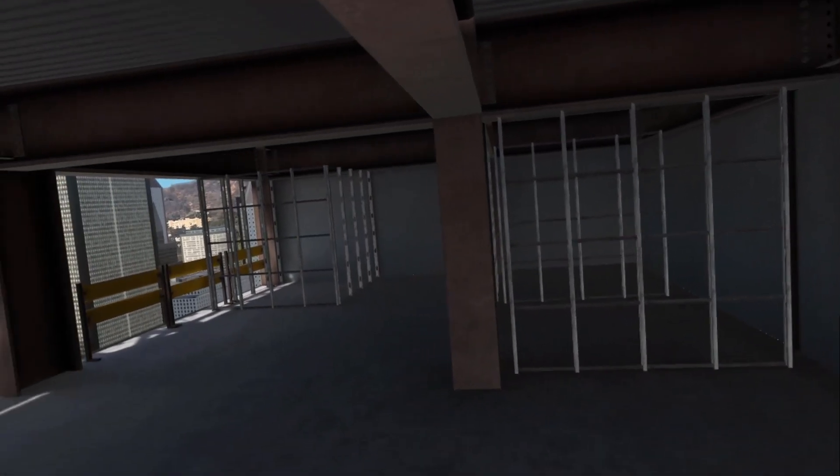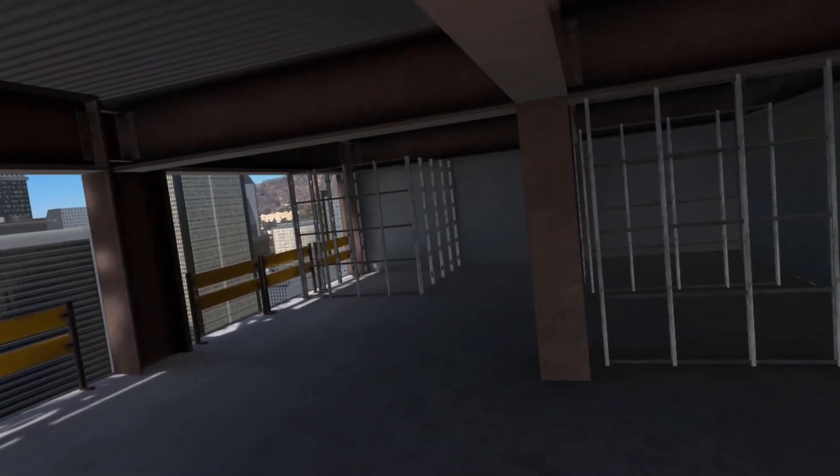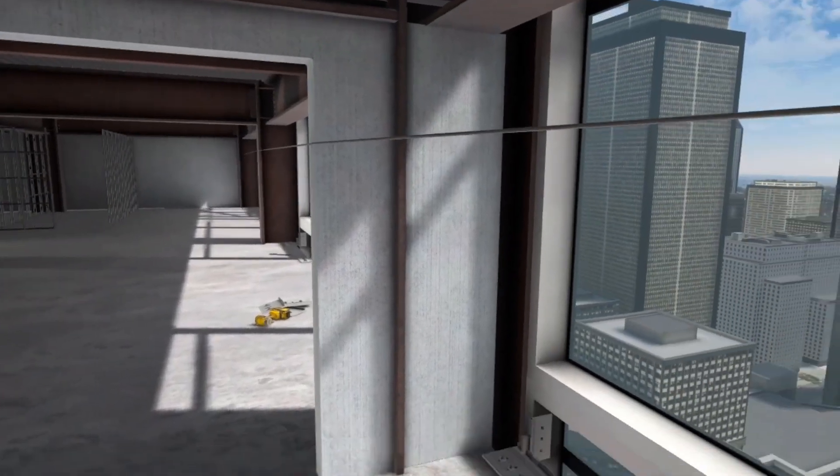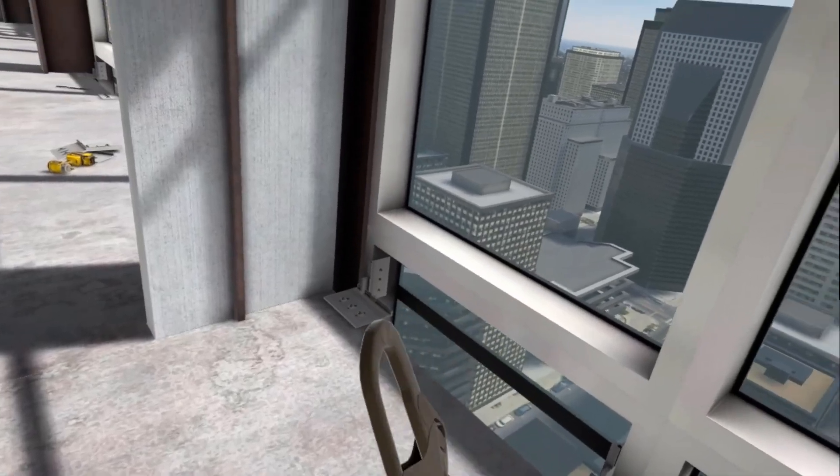First thing you're going to do today is install curtain wall. Clip onto that safety cable. We don't want you to fall off the building on your first day.